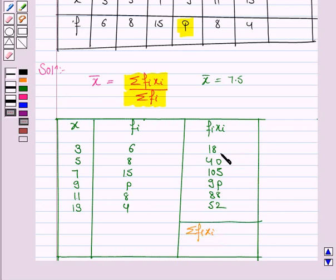It would be 18 plus 40 plus 105 plus 88 and 52 is 303 plus 9P.